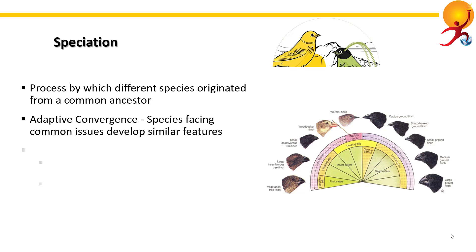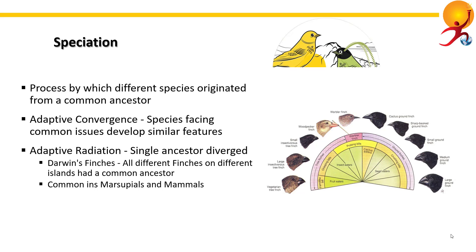Then there is adaptive radiation — when a single ancestral form diversifies into several or many different types because they spread to various regions or environments. One example is Darwin's finches. The classic example is when Darwin visited the Galapagos Islands during his five weeks there, he noticed that finches differed from one island to another.